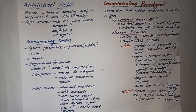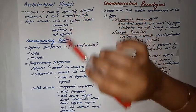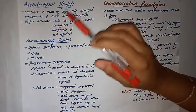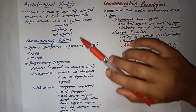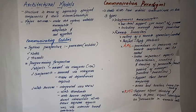Hi everyone. Today's class we are going to study about architectural models. Last class we discussed physical models; today's class we will be discussing architectural models. Architectural models can describe a distributed system in a number of ways. The three types are physical models, architectural models, and fundamental models.